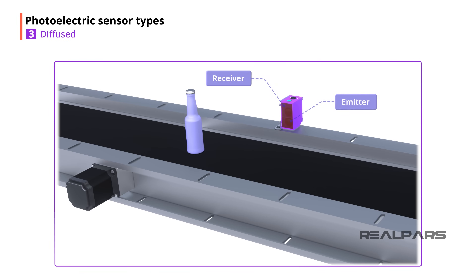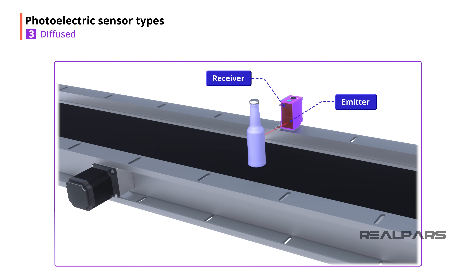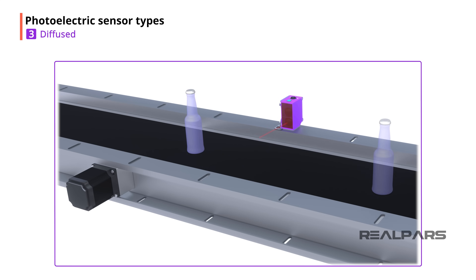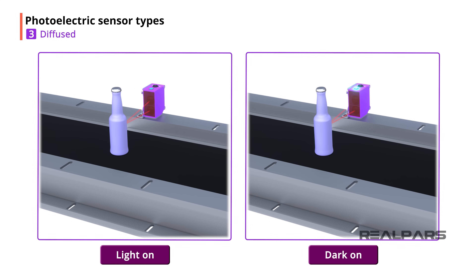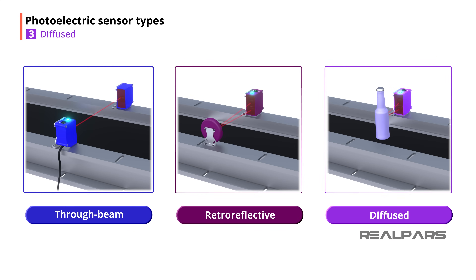Diffused photoelectric sensors have the emitter and receiver together in the same component. For the diffused sensor to work, the sensor's emitter needs to be pointed at an object so the light travels from the sensor's emitter to the object and then bounces back to the sensor's receiver. The diffused sensor output works the same as the through-beam and retro-reflective sensor outputs. Diffused sensors can also have a light on/dark on mode selector switch. The main disadvantage of using a diffused sensor is it has the shortest detection range of the three sensors, because depending on the object's shape, size, and color, it might not reflect light very well back to the sensor's receiver.